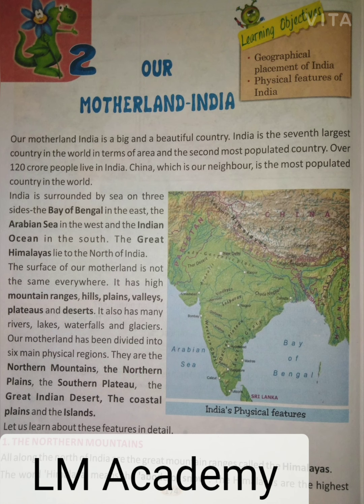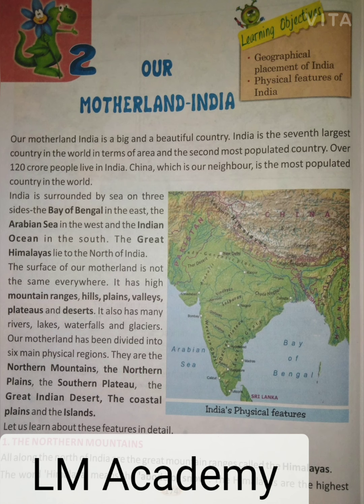Our Motherland — India is a big and beautiful country. India is the seventh largest country in the world in terms of area. Chetrapal ke aadhar par yah sansar ka saatva sabse bada rashtriya desh hai, and the second most populated country. 120 crore se bhi zyada log Bharat mein rehte hain. China, which is our neighbor, jo humara padosi hai, is the most populated country in the world.